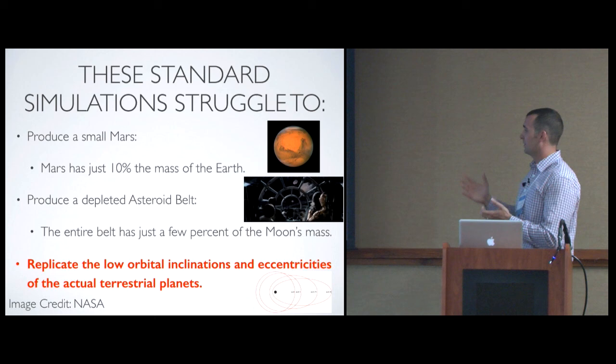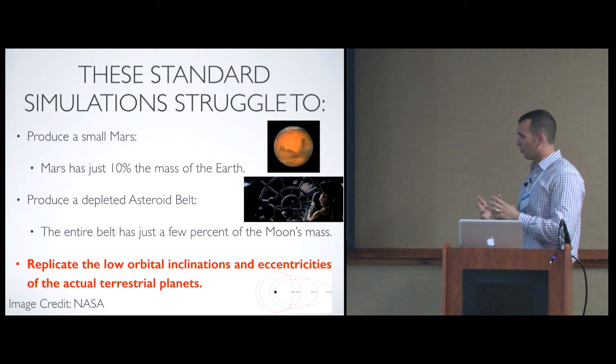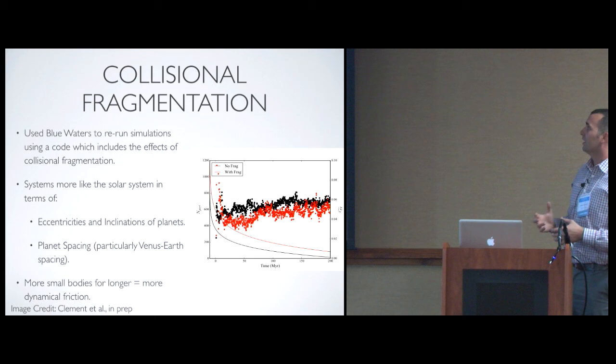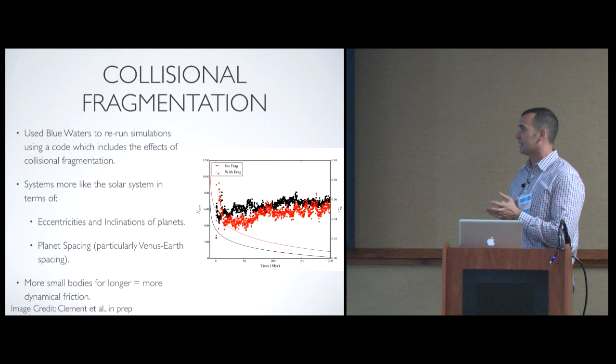So how do we do with forming terrestrial planets on dynamically colder orbits, lower orbital eccentricities and inclinations? We didn't do too well. The original simulations were just as bad as everyone else was doing. So we thought, well maybe one of the issues is that our original simulations and the majority of the work that's done in the field doesn't take collisional fragmentation into account.